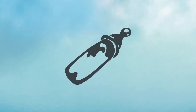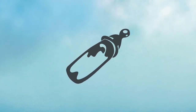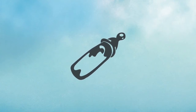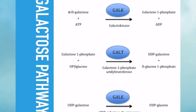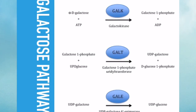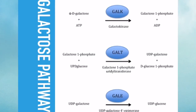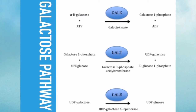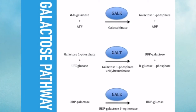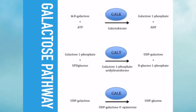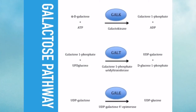Before tackling the explanation of the manifestations of galactosemia, you must first discuss the galactose pathway. This is the galactose pathway. There are three major enzymes involved in the metabolism of galactose, and they are the galactokinase, the galactose-1-phosphate uridyl transferase, and the UDP-galactose-4-epimerase.